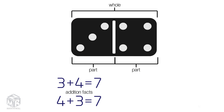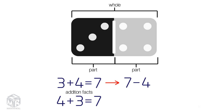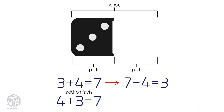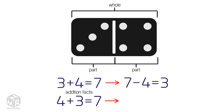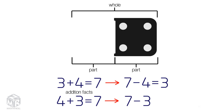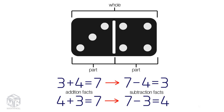How can you use an addition fact to find the answer to a subtraction fact? Subtraction is the opposite of addition. We can subtract one part from the whole to get the other part. 7 minus 4 equals 3. And 7 minus 3 equals 4. These are the subtraction facts.